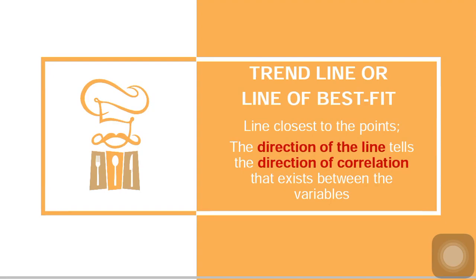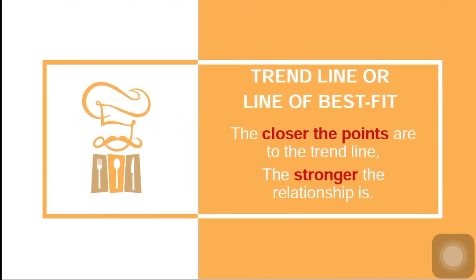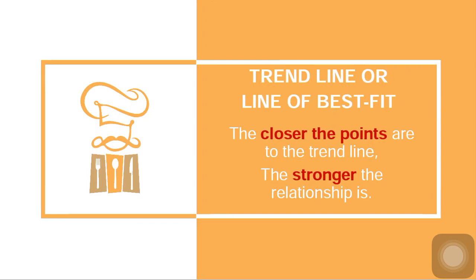The direction of the line tells the direction of the correlation. If the trend line points to the right or goes up, the slope is positive, so there is a positive correlation. If the line points to the left or goes down, its slope is negative, and there is a negative correlation. The closer the points are to the line, the stronger the relationship is. The direction of the line tells us the direction of the relationship, but how close the points are to the line tells us the strength.